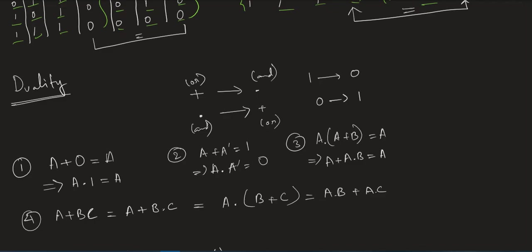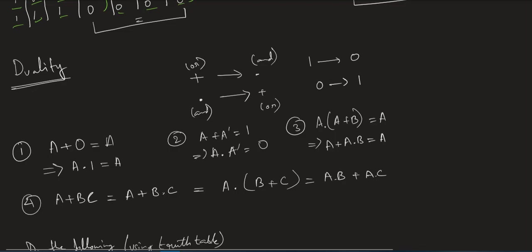For example, A plus 0 equals A. If you find the dual: A stays A, plus changes to multiply, 0 becomes 1, A stays A — so the dual is A·1 = A. In the second example, A plus A complement equals 1. To find the dual: A stays A, plus changes to multiply, A complement stays A complement, and 1 becomes 0 — giving A·A' = 0.